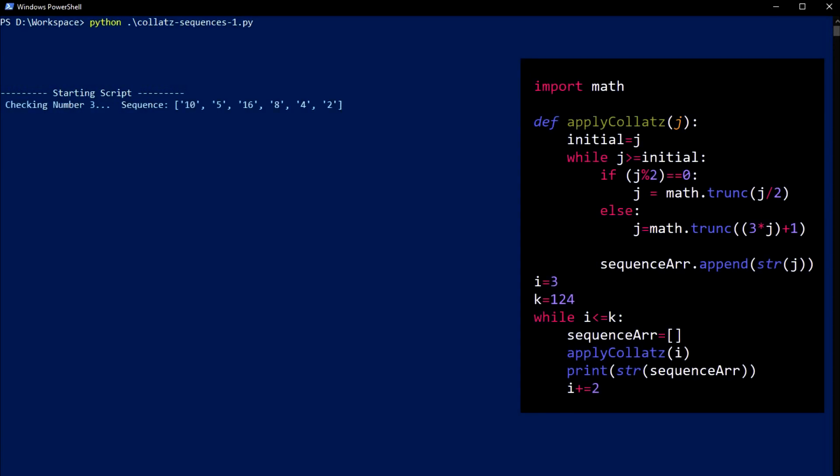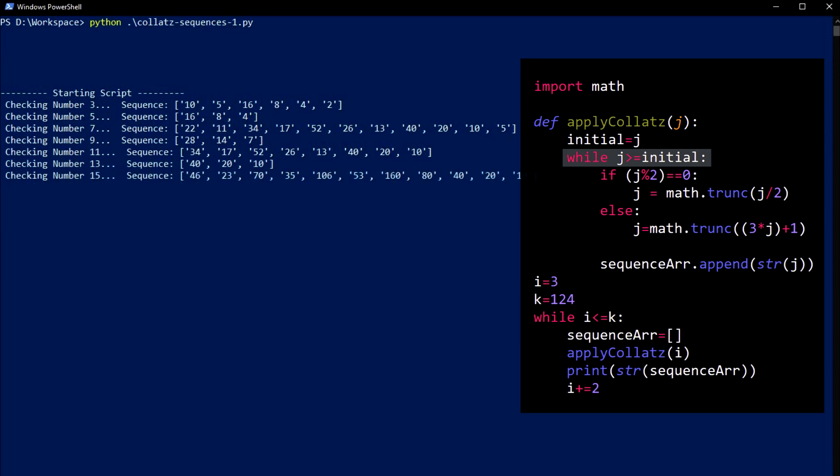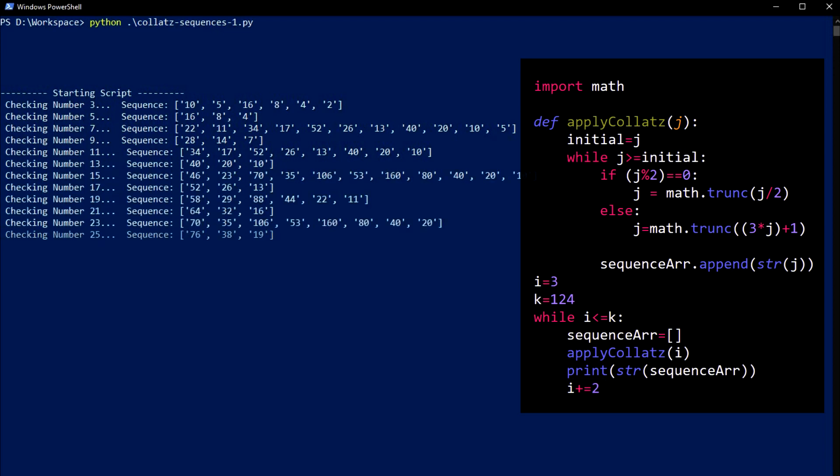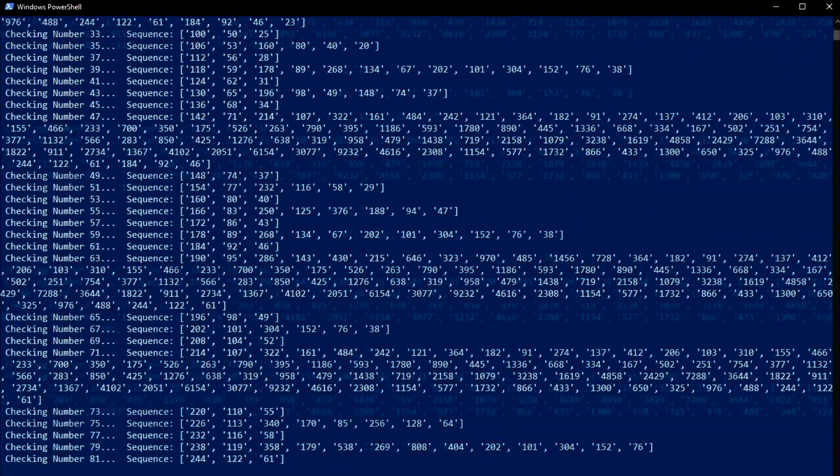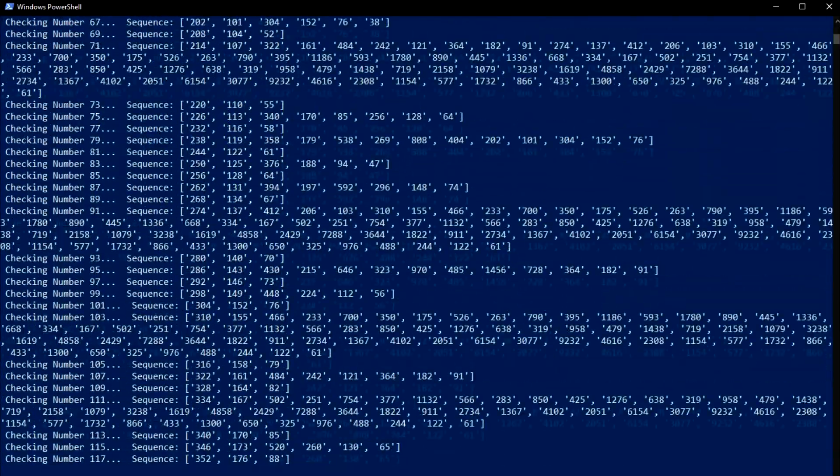I created a Python script to generate sequences with odd starting numbers, where it will short circuit when it decreases below its starting value, then move on to the next odd number. There seemed to be some patterns, but it was difficult to tell, so I had to make some adjustments.